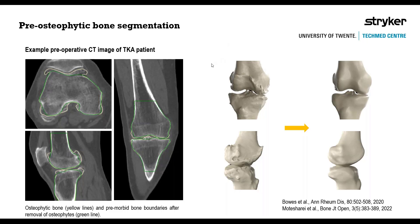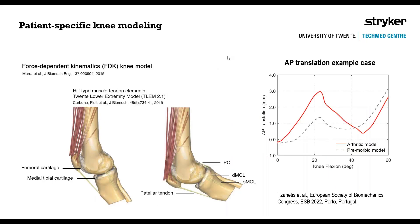These bone geometries are used as input for scaling a musculoskeletal knee model. This is a knee-only model developed using a previously well-established methodology. It comprises the distal femur, the proximal tibia, and the patella. For soft tissues, it includes the quadriceps—simulating only knee extension movement—and ligaments modeled as non-linear elastic spring elements with stiffness and reference strength parameters retrieved from literature data.